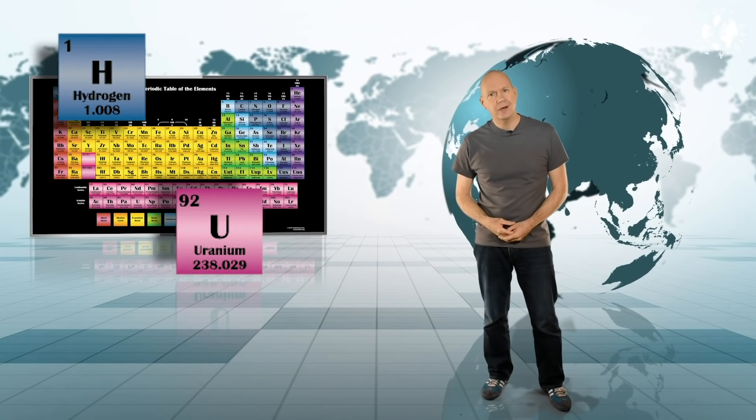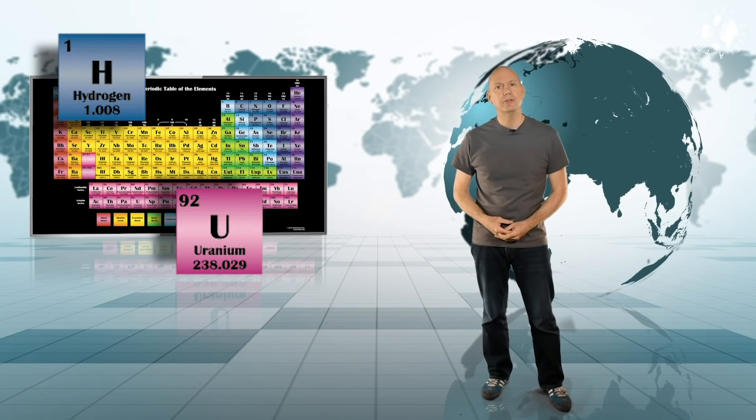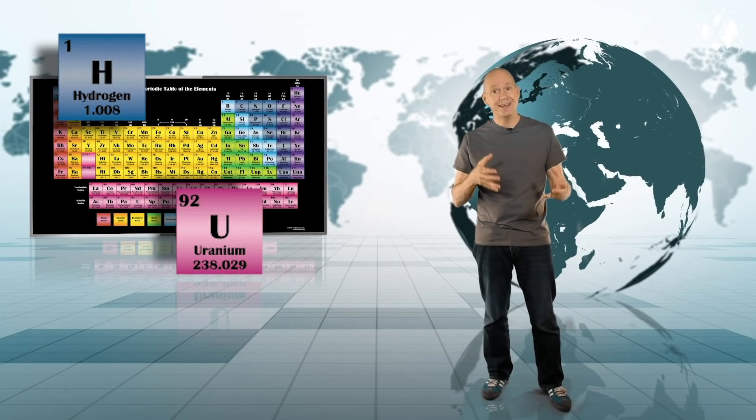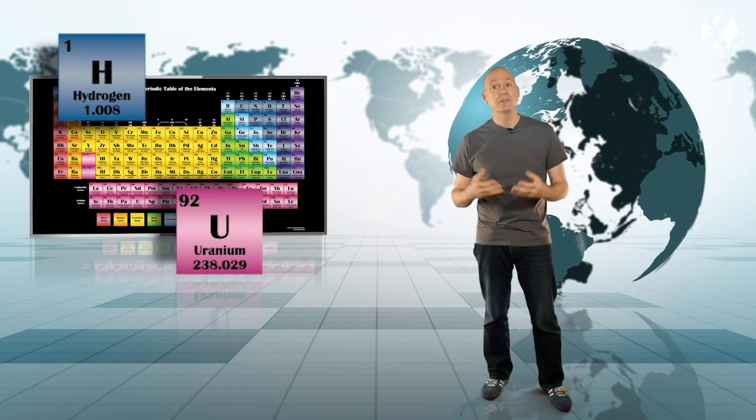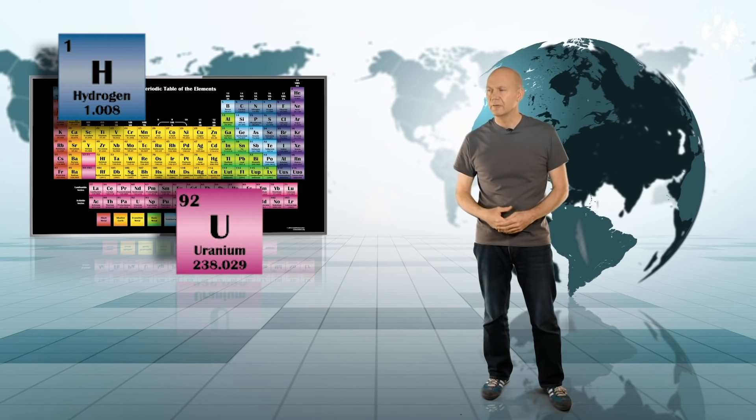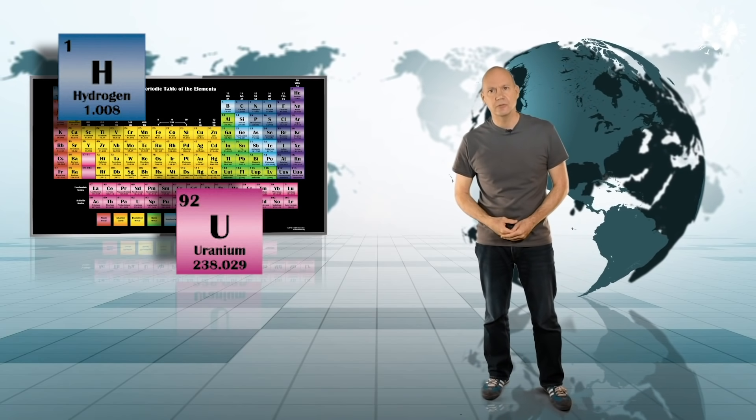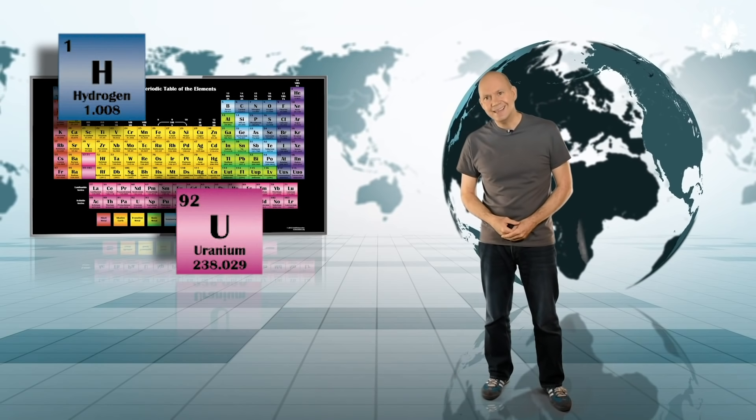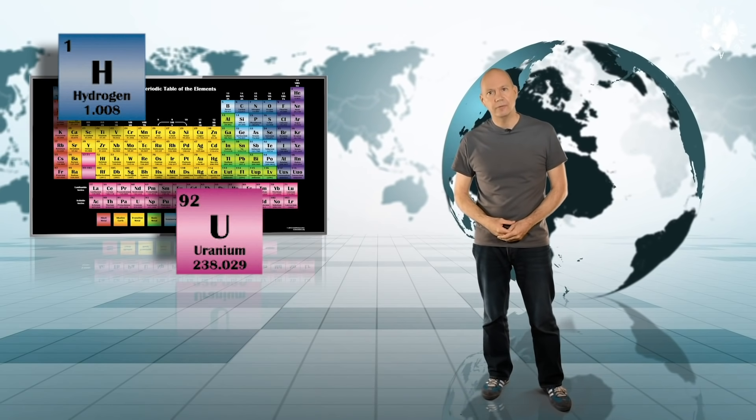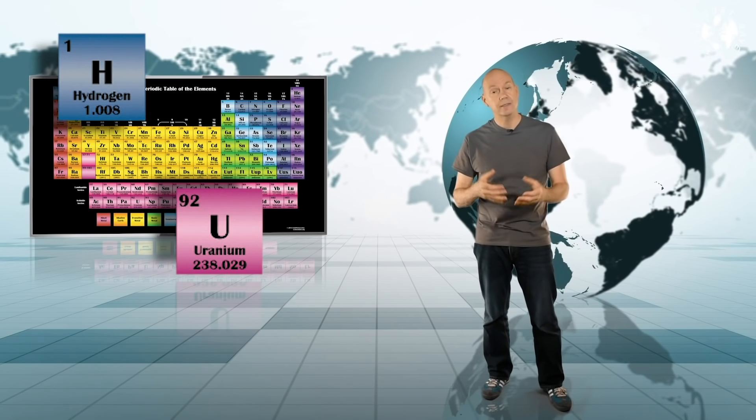Uranium occurs naturally in two different isotopes uranium-235 and uranium-238, which are essentially variations of the element with different numbers of neutrons. Uranium-235 has 143 neutrons and uranium-238 has 146 neutrons, which is where their atomic mass unit numbers come from. Uranium-238 is by far the most common of these two naturally occurring isotopes.